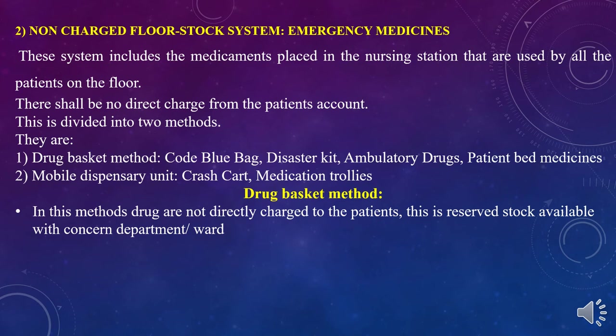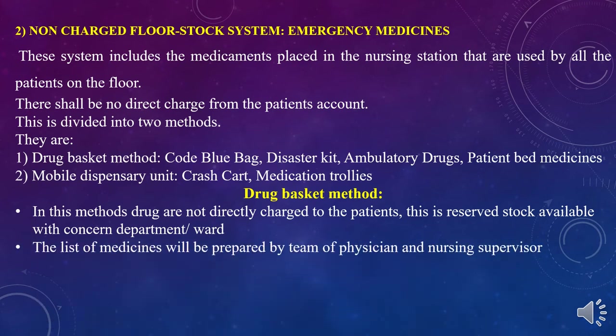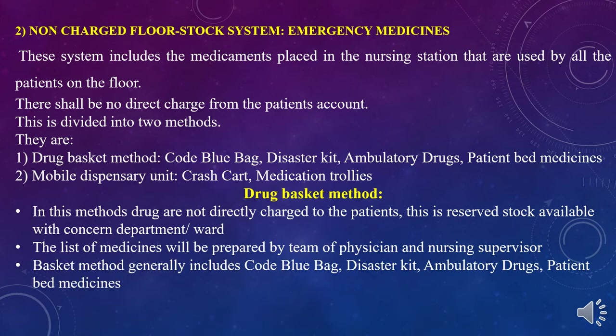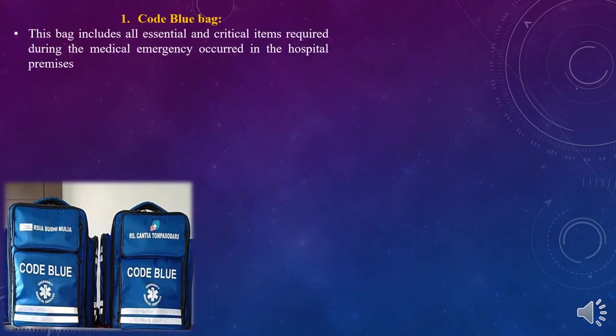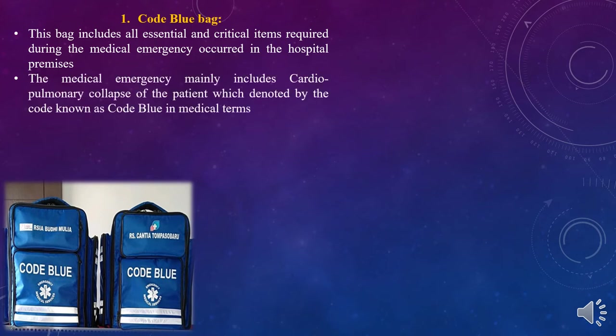In the drug basket method, drugs are not directly charged to the patient. This is reserved stock available with the concerned department and ward. The list of medicines is prepared by a team of physicians and nursing supervisors. The basket method generally includes the code blue bag, disaster kit, and ambulatory drugs. The code blue bag includes all essential and critical items required during medical emergencies occurring in hospital premises.